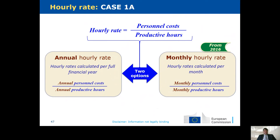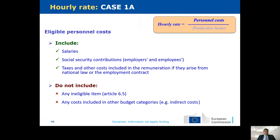There are two options for calculating hourly rates: annual calculation or monthly calculation. The monthly calculation was introduced later in the program from 2016. The next slide summarizes what can be included in personal cost: salaries, social charges of the employer, and various taxes related to personal cost. Ineligible items must be excluded, as must costs included in other cost categories such as indirect costs — this is especially important for average costs and unit costs.